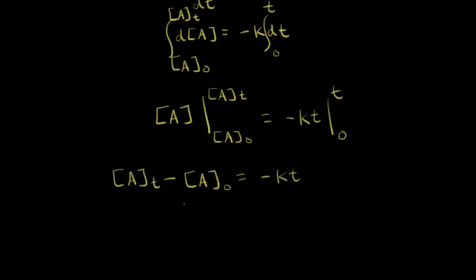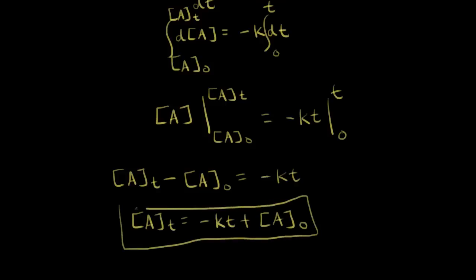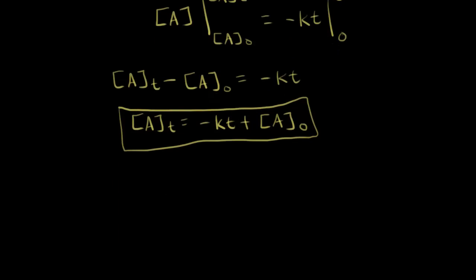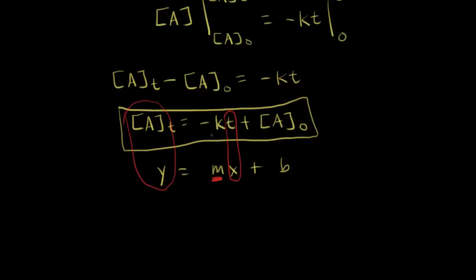We could rearrange this — moving the initial concentration to the right side — so we get: the concentration of A equals negative Kt plus the initial concentration of A. This is another way to write our integrated rate law. If we look at the form of that, it's y equals mx plus b. So if we put time on the x-axis and concentration of A on the y-axis, we get a straight line. The slope of that line equals negative K, and the y-intercept is the initial concentration of A.